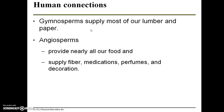Gymnosperms are responsible for supplying most of our lumber and paper. Fir trees, pine trees, juniper trees — any of those coniferous trees can be used for firewood, building material, and manufacturing paper. Angiosperms provide nearly all of our food, as well as fiber, medications, perfumes, and decoration.